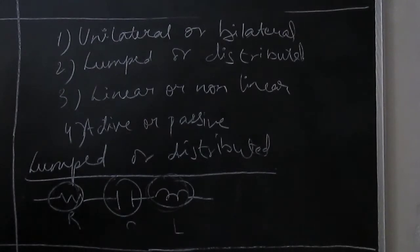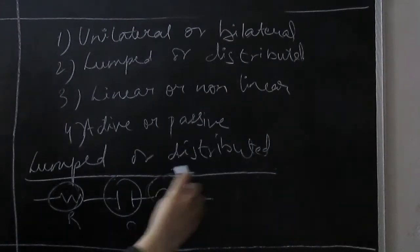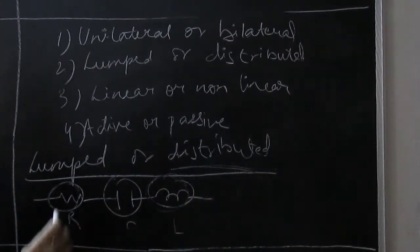But if we keep talking about a transmission line, we know that there is resistance, capacitance, and inductance. It will be distributed in a transmission line and it will not be physically separable. So we call it a distributed circuit element. Unlumped, it will be physically separable.